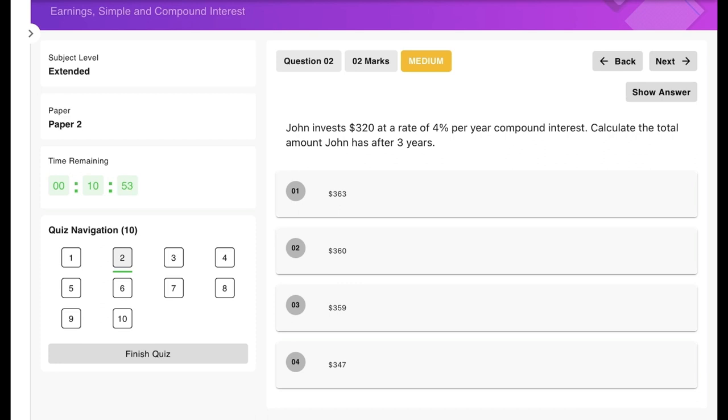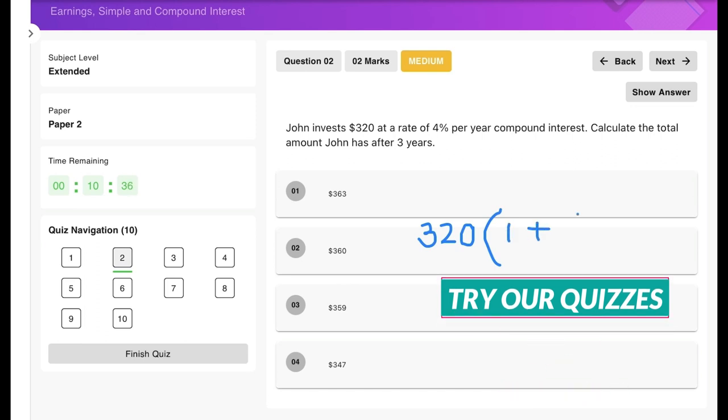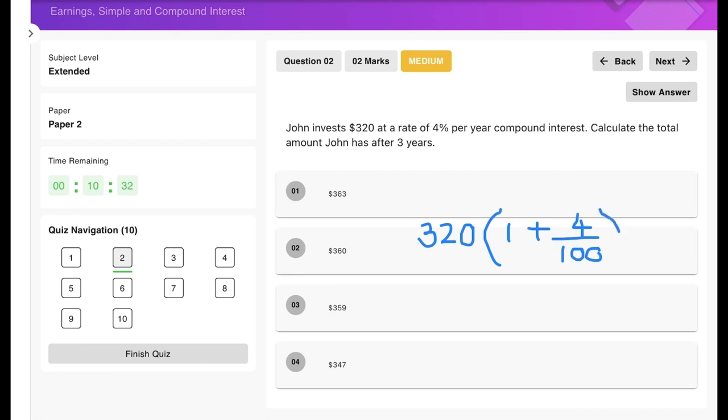All right, so let's finish off with some questions. John invests $320 at a rate of 4% compound interest. Calculate the total amount John has after three years. Okay, so since this is simply just plugging into the formula, $320 is the principal amount, rate is 4, and we're going to put this over 100 to the power of three. So this is going to be 320 times 1.04 to the power of three, and this gives me an answer of $359.9, so I'm going to take that as $360.